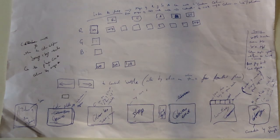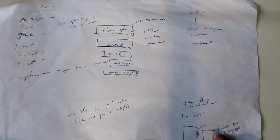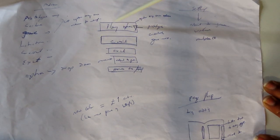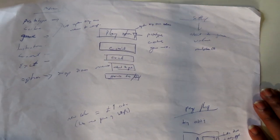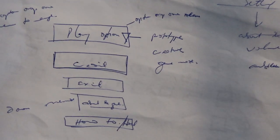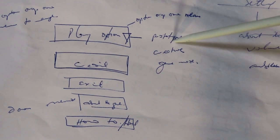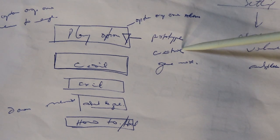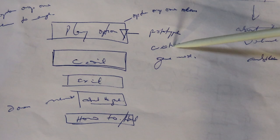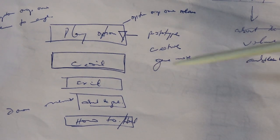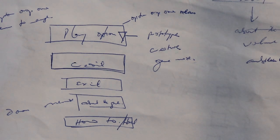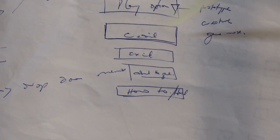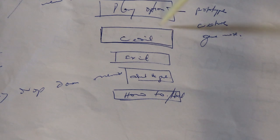Those are my sketches that have been implemented. For the menu I went with this design — we have play, and in play mode we have a prototype, creative, and game mode. Since this is a prototype I decided to lock the creative and game mode so you only play the prototype. Later I'll work on those when there's time, and all things being equal you'll be able to access all three parts.